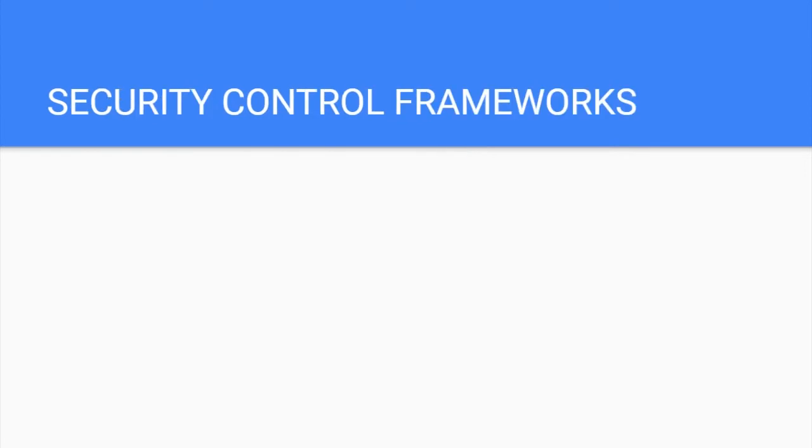A security control framework, or simply a framework, is a shell of something or a starting point. A security control framework is a list or set of controls. A control is the same as a safeguard, which is simply a specification of how you should do something.